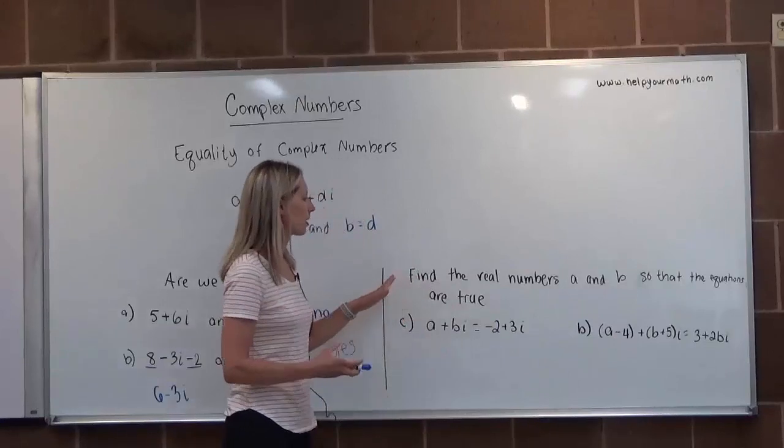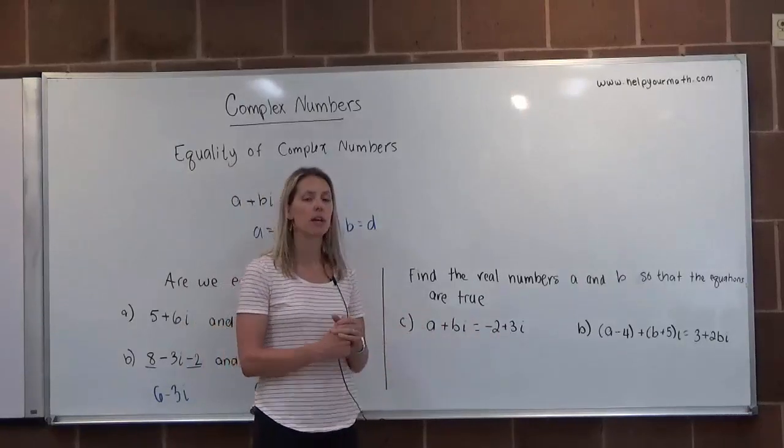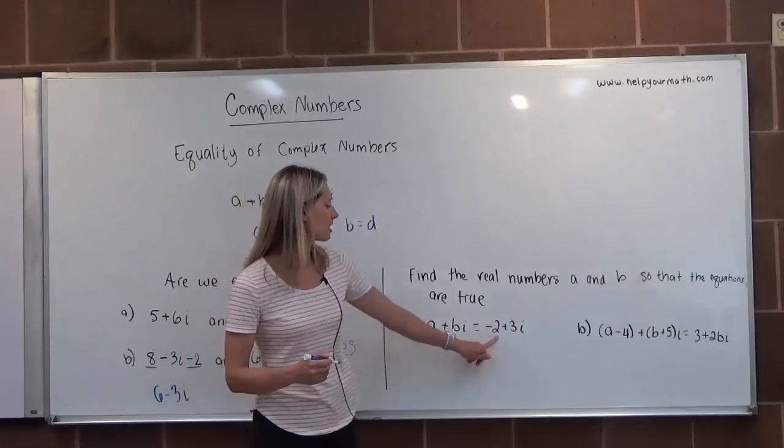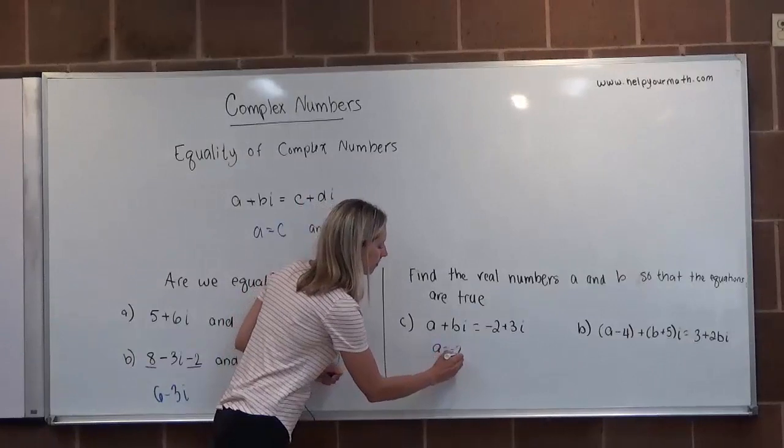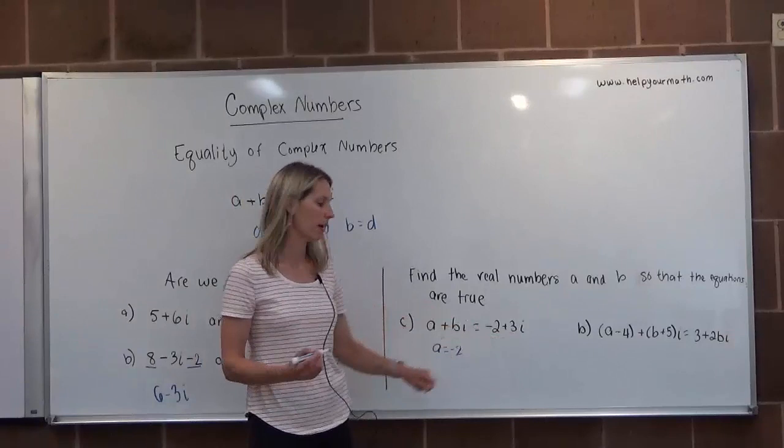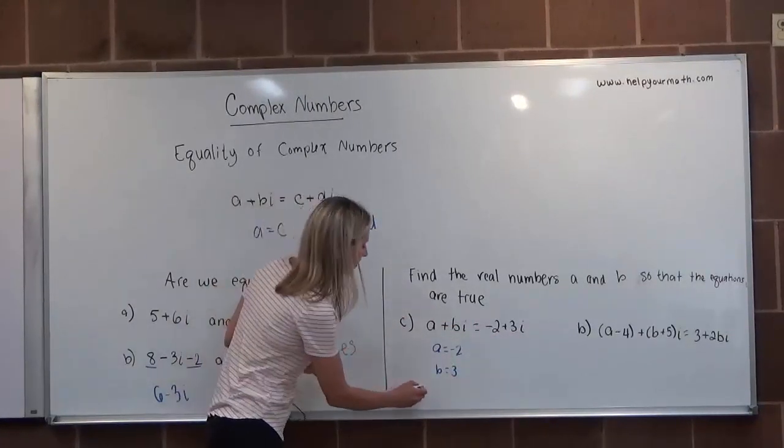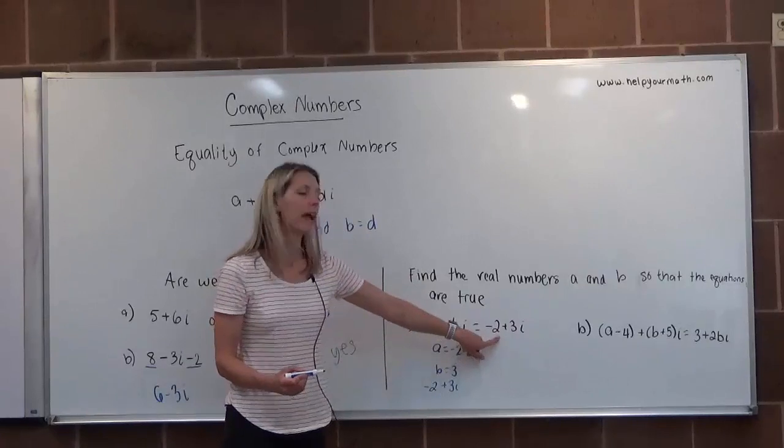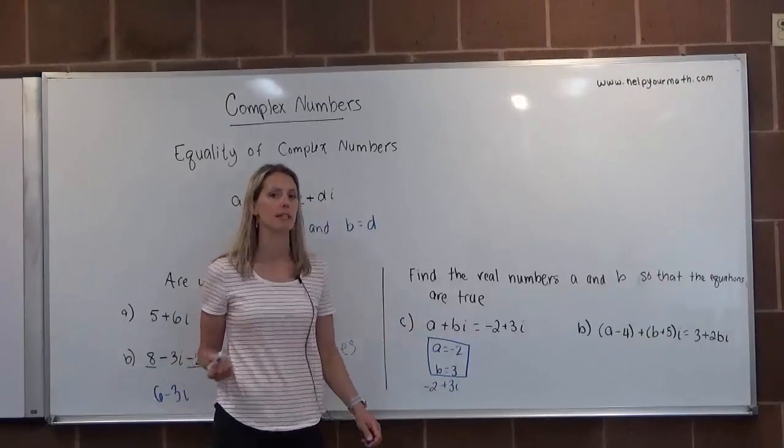In the next portion, we're going to find the real numbers A and B so that the equations are true. We're going to force these two numbers to be equal complex numbers. The real part here has to match the real part here, which means A must be -2. And the coefficient of our complex part must equal the coefficient of our complex part, so B must equal 3. If A=-2 and B=3, that would give me -2+3i. Does that match what we have here? Yes it does. So the answer is A=-2 and B=3.